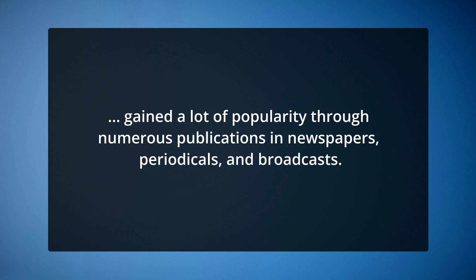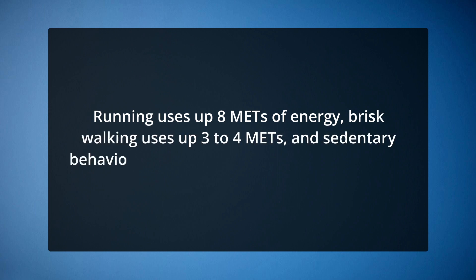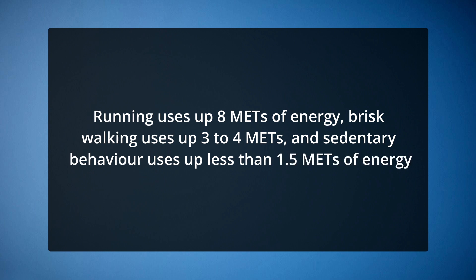Little to no physical activity and a low energy expenditure of fewer than 1.5 METs — metabolic equivalent task, which is used to measure the energy expended during activities — define a sedentary lifestyle as a discrete class of behaviours. Running uses up 8 METs of energy, brisk walking uses up 3–4 METs, and sedentary behaviour uses up less than 1.5 METs. Researchers quantify sedentary behaviour using measures such as car time, chair or sitting time, indoor time and screen time.